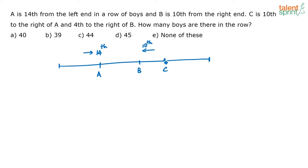C is 10th to the right of A. A's position from the left end is 14th, and C is 10 positions after that, so C's position from the left end is going to be 24th. C is 24th from the left end.